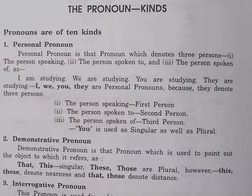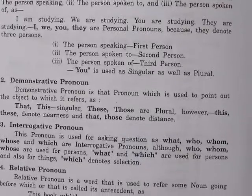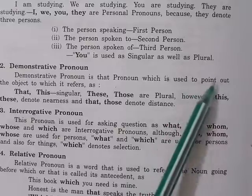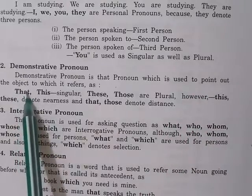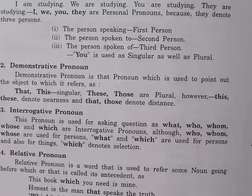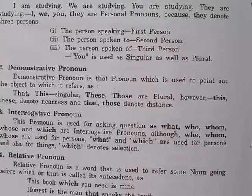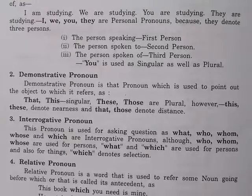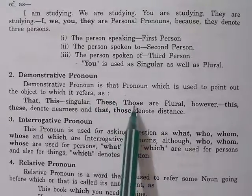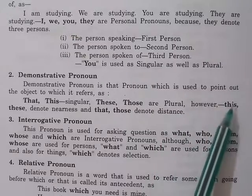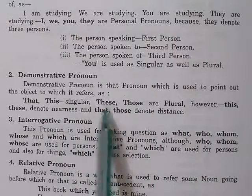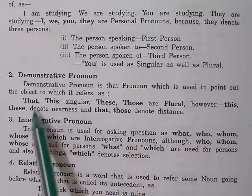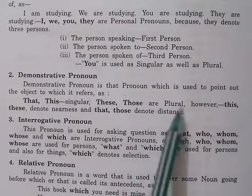The second one is demonstrative pronoun. Demonstrative pronoun is that pronoun which is used to point out the object to which it refers. For example: that, this are singular; these, those are plural. This and these denote nearness, and that and those denote distance.